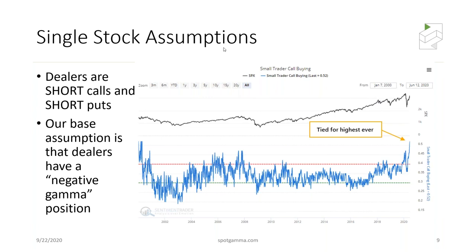One of the big stories is SoftBank and gamma. What we think was such a big driver of markets moving higher in August is the concept of positive gamma — as calls are bought by retail or by SoftBank, it forces dealers to buy the underlying stock to hedge. As more calls are bought, you get a reflexive cycle: more dealers have to buy stock, that pushes the stock up, which leads more people to want to buy calls. It's a self-reinforcing cycle higher.